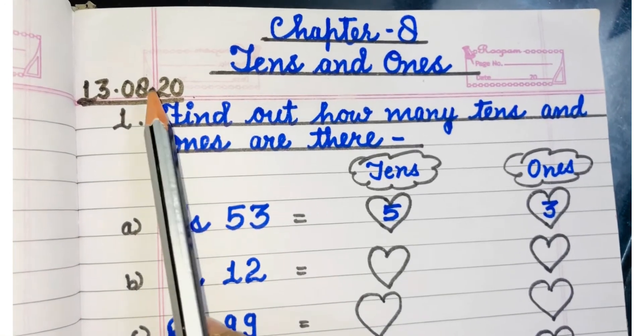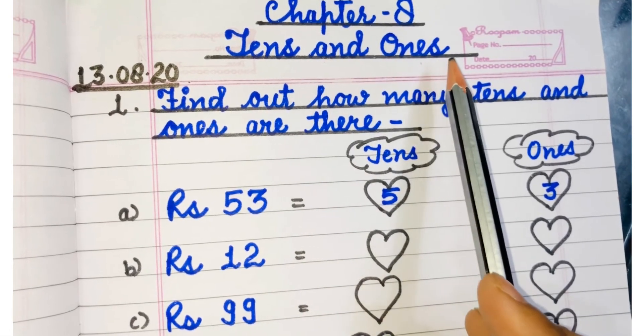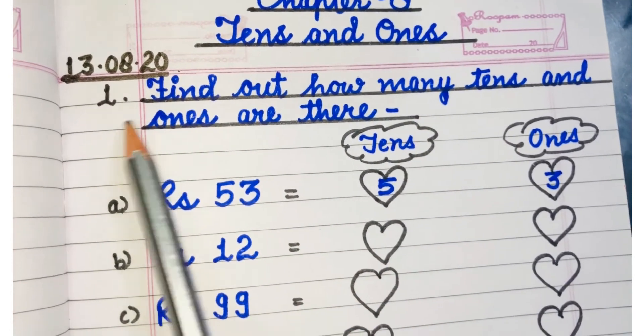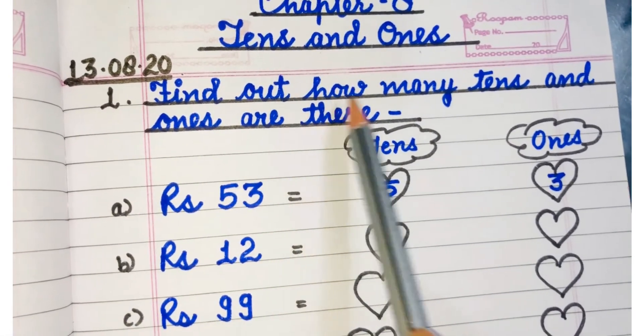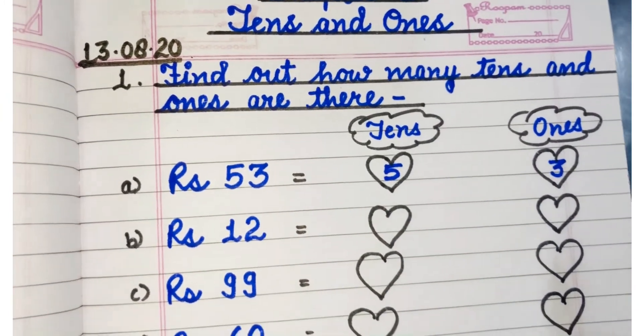First of all, you will write date, chapter number and chapter name. Then the first question is, find out how many tens and ones are there?